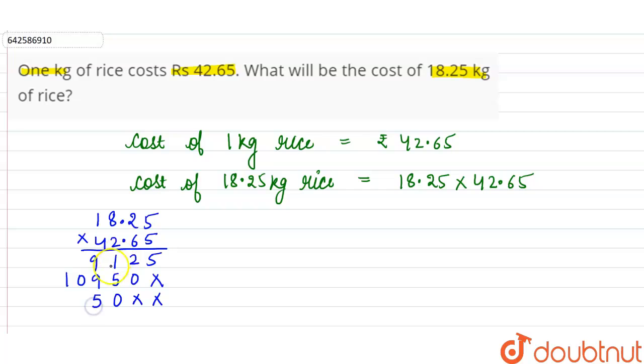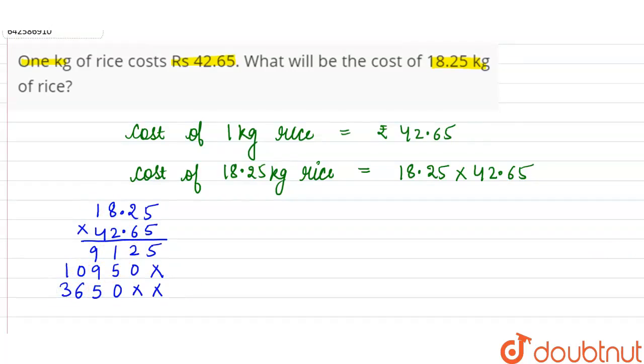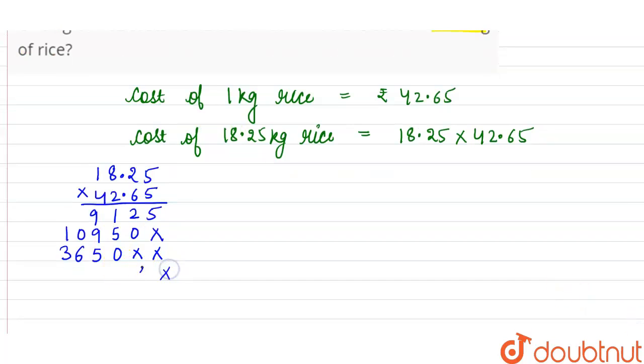2 into 8 is 16, 1 carry. 2 into 1 is 2 plus 1 is 3. Then 4 into 5 is 20, 2 carry. 4 into 2 is 8 plus 2 is 10, 1 carry. 4 into 8 is 32 plus 1 is 33, 3 carry. 4 into 1 is 4 plus 3 is 7.